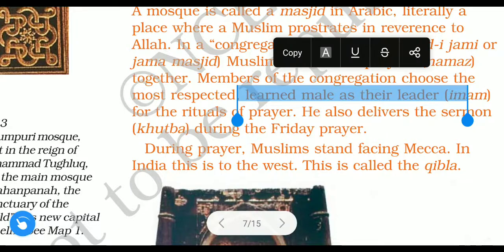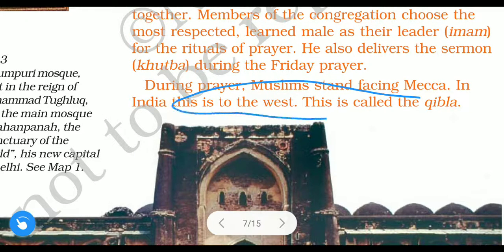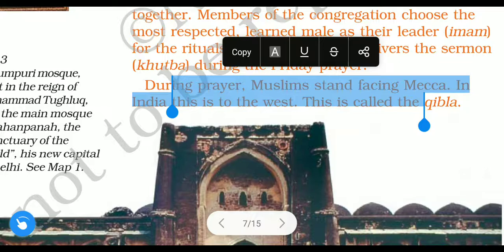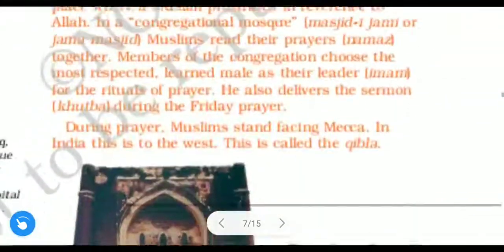During prayer, Muslims stand facing Makkah. Makkah is the holy city of Islam. The direction toward Makkah is called the qibla. Since Makkah is located to the west of India, Muslims in India face the west direction while praying.